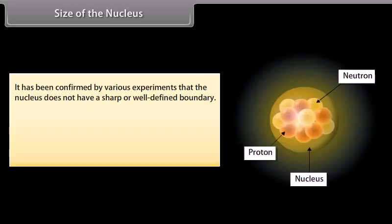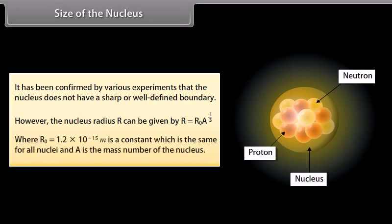Size of the nucleus. It has been confirmed by various experiments that the nucleus does not have a sharp or well defined boundary. However, the nucleus radius R can be given by R is equal to R not into cube root of A, where R not is equal to 1.2 into 10 raised to the power minus 15 M is a constant which is the same for all nuclei, and A is the mass number of the nucleus.